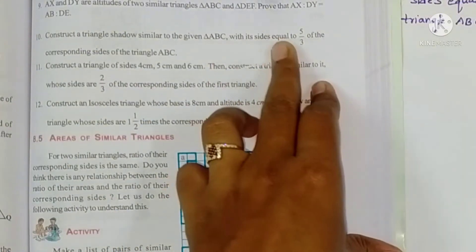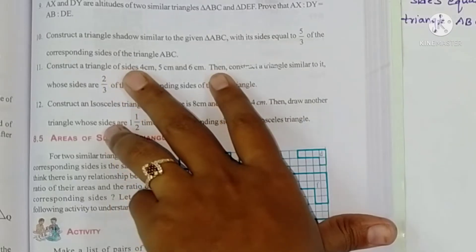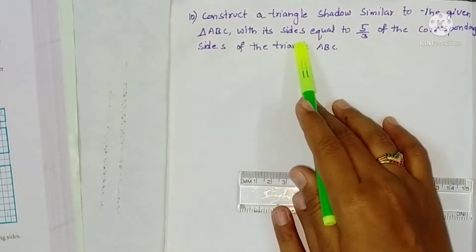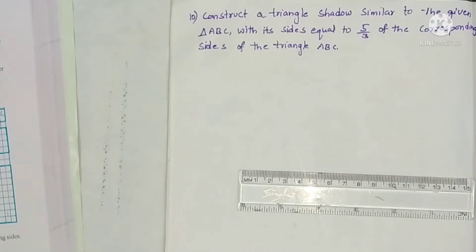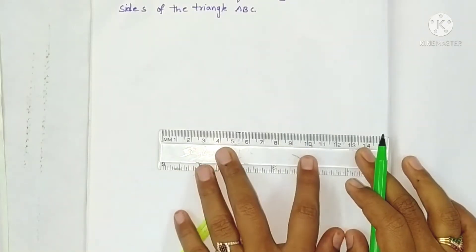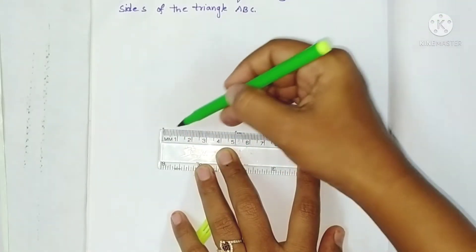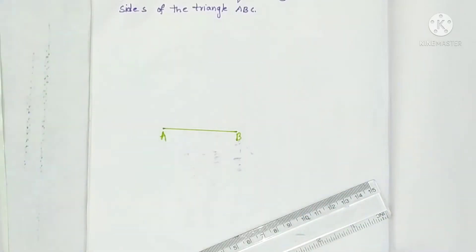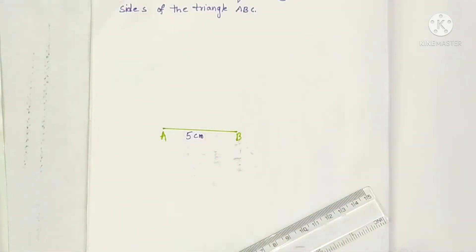So first, triangle ABC is there and we have to construct its shadow with sides equal to 5/3 of the corresponding sides. The measurements are not given, so we construct with our own choice. I am taking AB as 5 centimeters.